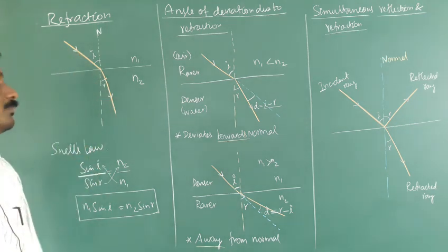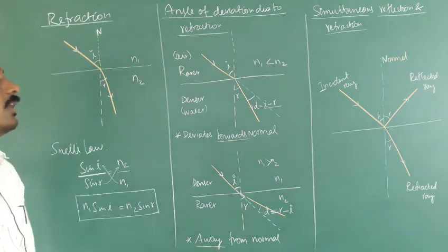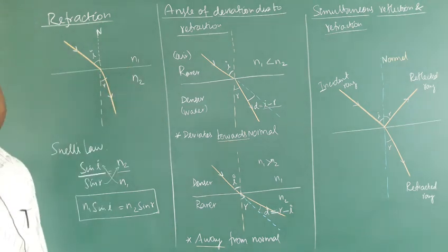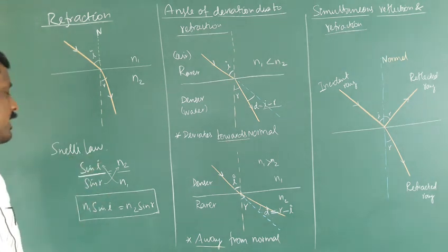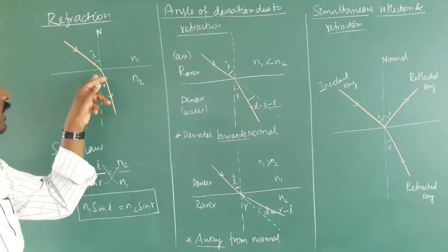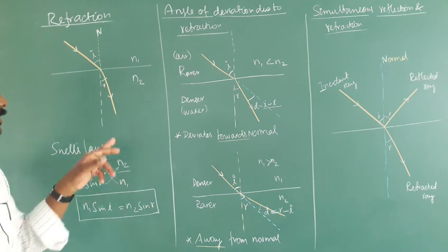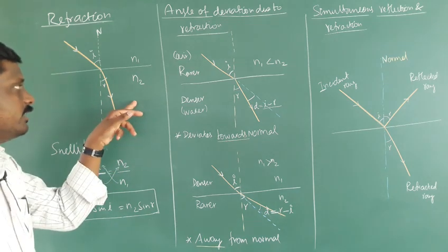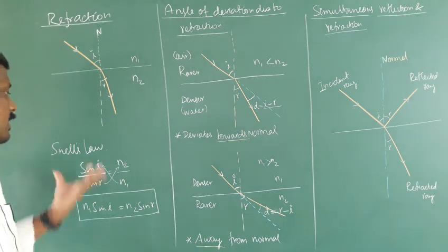Snell's law has two points. First, the angle of incidence, the angle of refraction, and the normal — which is perpendicular to the boundary — all lie in the same plane, that is, they are coplanar. Second, the ratio of the angle of incidence in the first medium to the angle of refraction in the second medium equals the ratio of the refractive index of the second medium to the refractive index of the first medium.